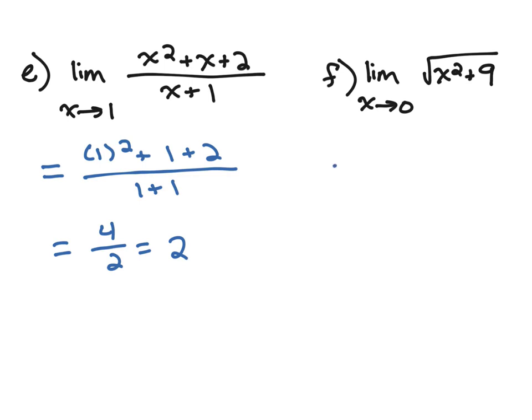Let's try problem F. If we substitute a 0 in here, we're going to get 0 plus 9 or the square root of 9 is 3.